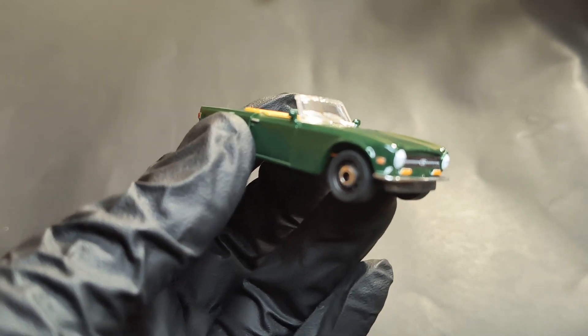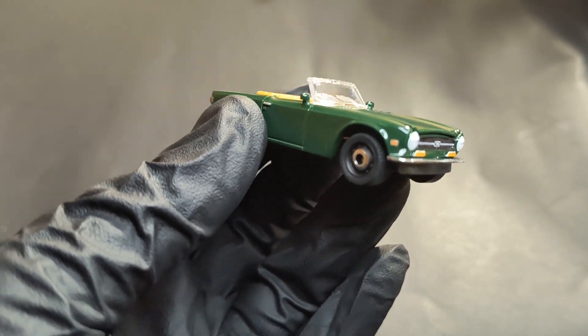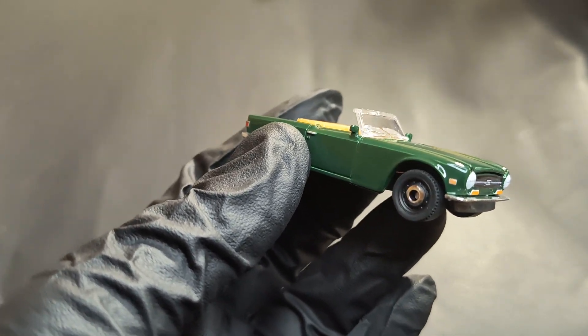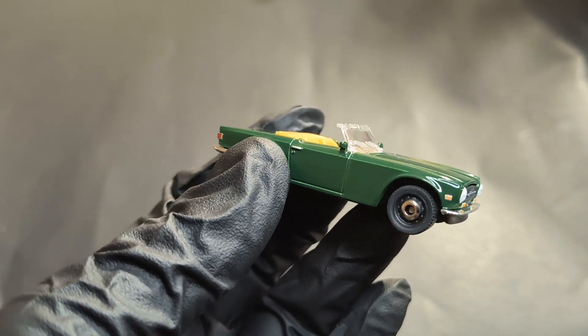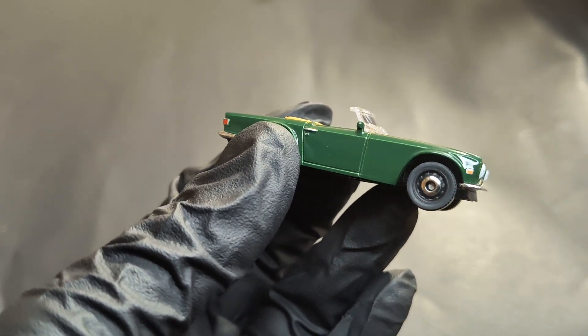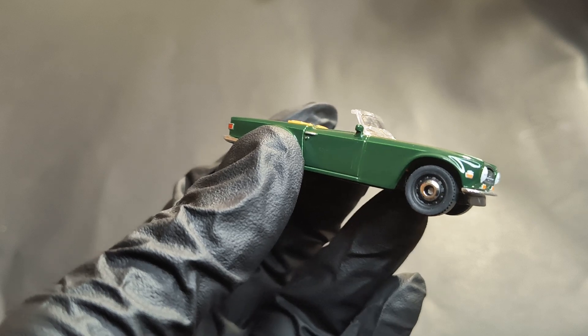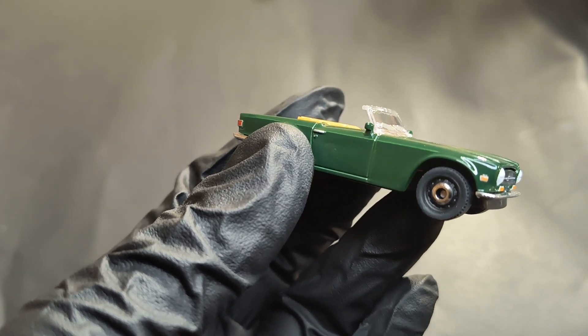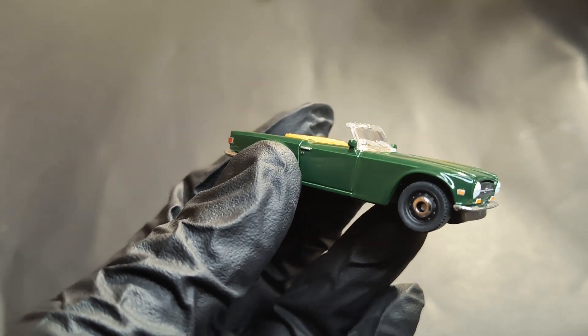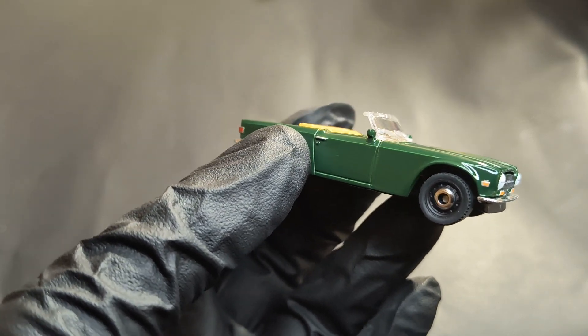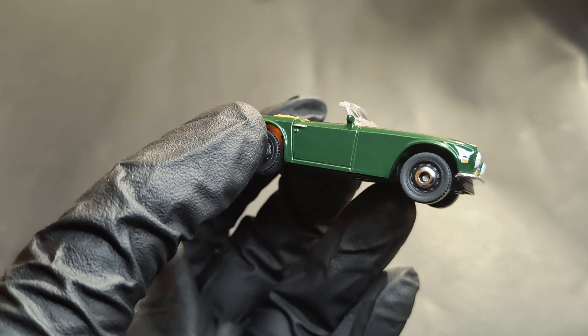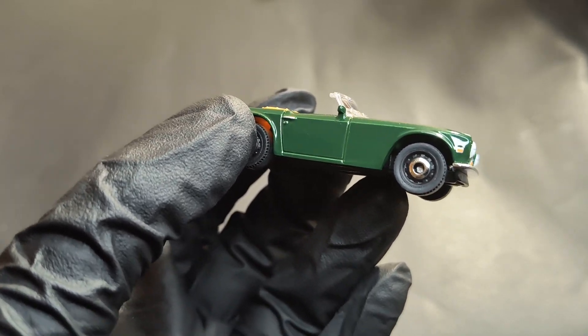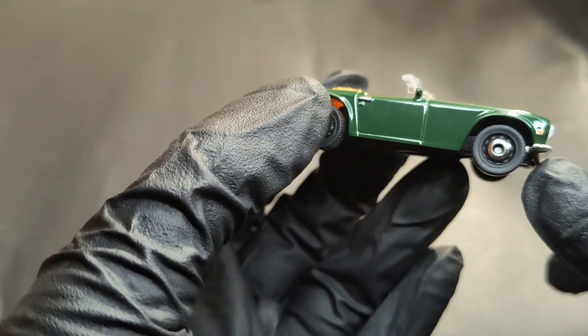I need subscribers, to be frank, so I can keep making these videos. Let's start. This is a Triumph TR6 by Matchbox, not from the mainline but the collector's edition. That's how you get nice details on it. First of all, these rubber tires and rubber wheels. We'll talk about all the other details. Let's start from the front.